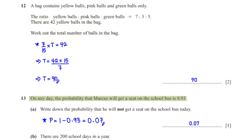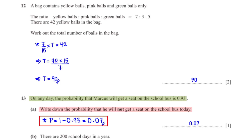On any day, the probability that Marcus will get a seat on the school bus is 0.93. The probability that he will not get a seat must add up to 1 with the probability that he will, so we subtract 0.93 from 1, giving 0.07.